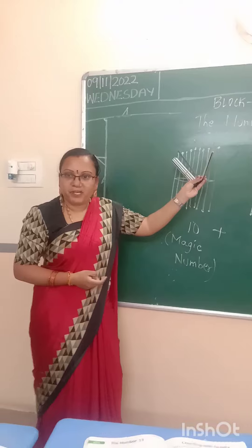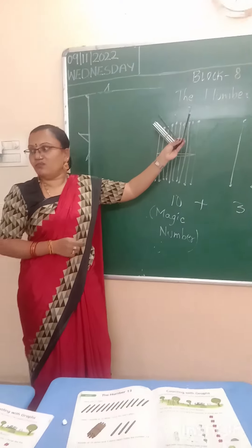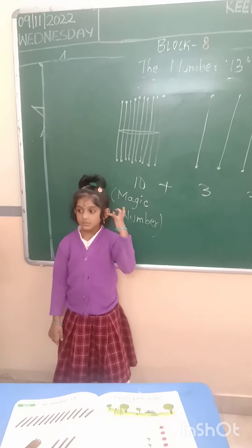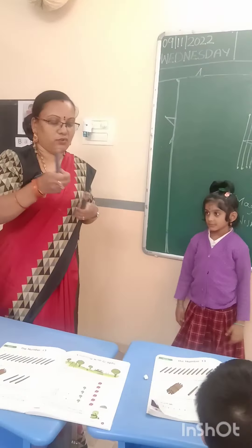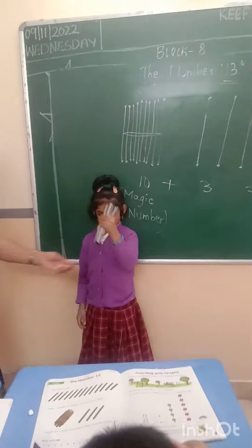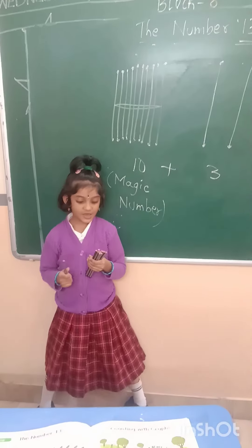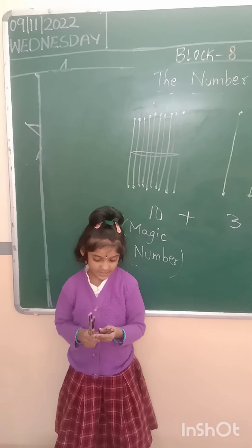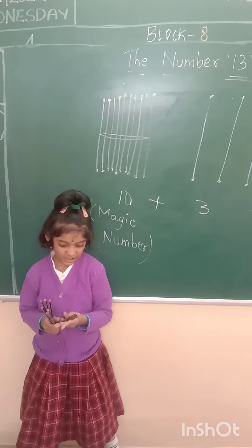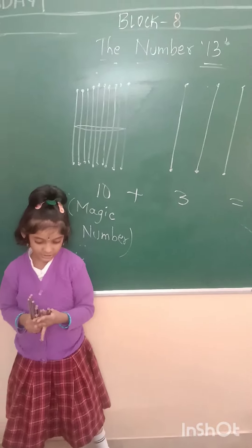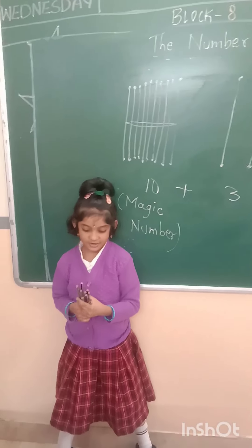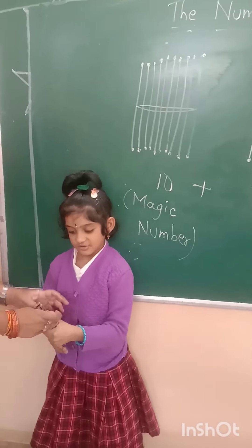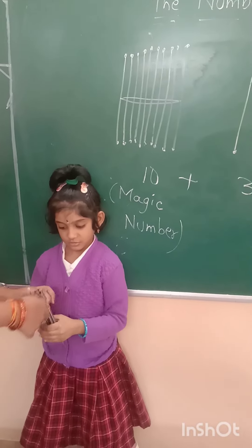Now Manohari will show me 13. Count the pencils first: 1, 2, 3, 4, 5, 6, 7, 8, 9, 10. What is 10? Magic number. Yes. For magic number, we will put a bundle. Now the 10 bundle is ready.